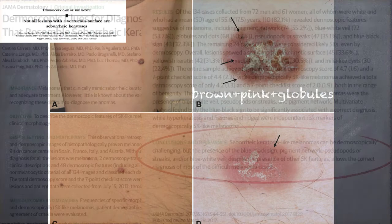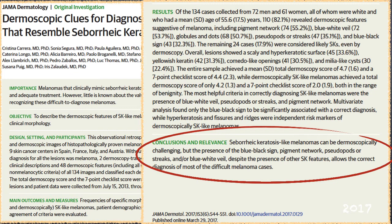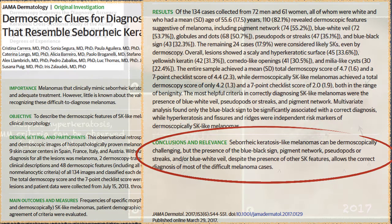We can recognize this tumor as a melanoma only if we use our dermatoscope. We conducted a large study under the IDS umbrella and found that seborrheic keratosis-like melanomas can be dermoscopically challenging, but the presence of the blue-black sign, pigment network located peripherally, pseudopods, streaks, and blue-white veil can be regarded as specific melanoma features and should raise our suspicion that it is not a seborrheic keratosis but a melanoma.